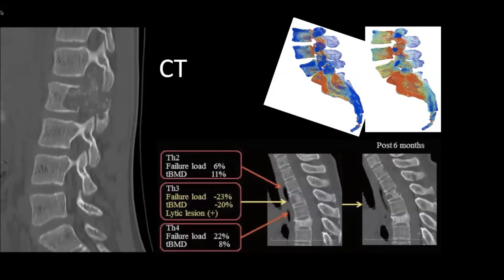With the SIN score? Exactly. The SIN score, which is very helpful. But in addition, we can use some of the software to contribute to our decision-making in terms of whether we think that a particular fracture is likely to occur if it hasn't already, or whether you're likely to have additional kyphosis going forward and so on.